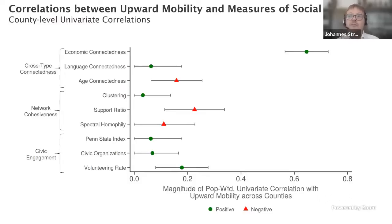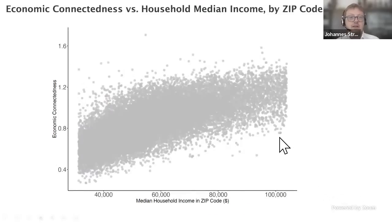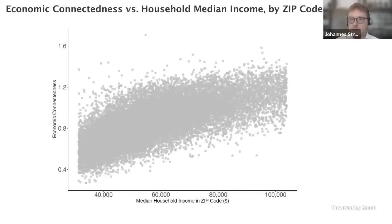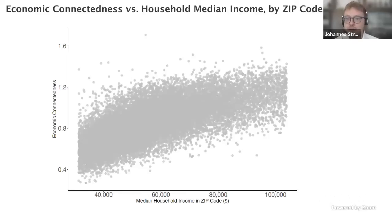We show a scatter plot where each dot is a US zip code. The horizontal axis plots median household income in that zip code, and the vertical axis plots economic connectedness — the share of high-income friends in the networks of low-income individuals. Unsurprisingly, there's a strong upward relationship: in areas with more high-income people around, it is easier for low-income individuals to make high-income friends.